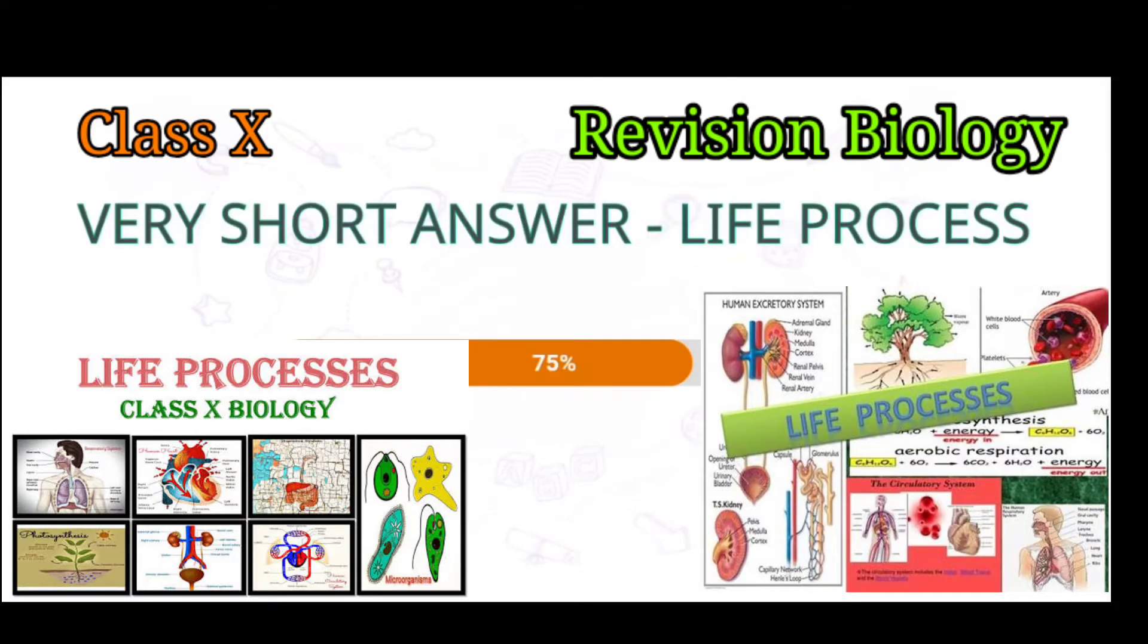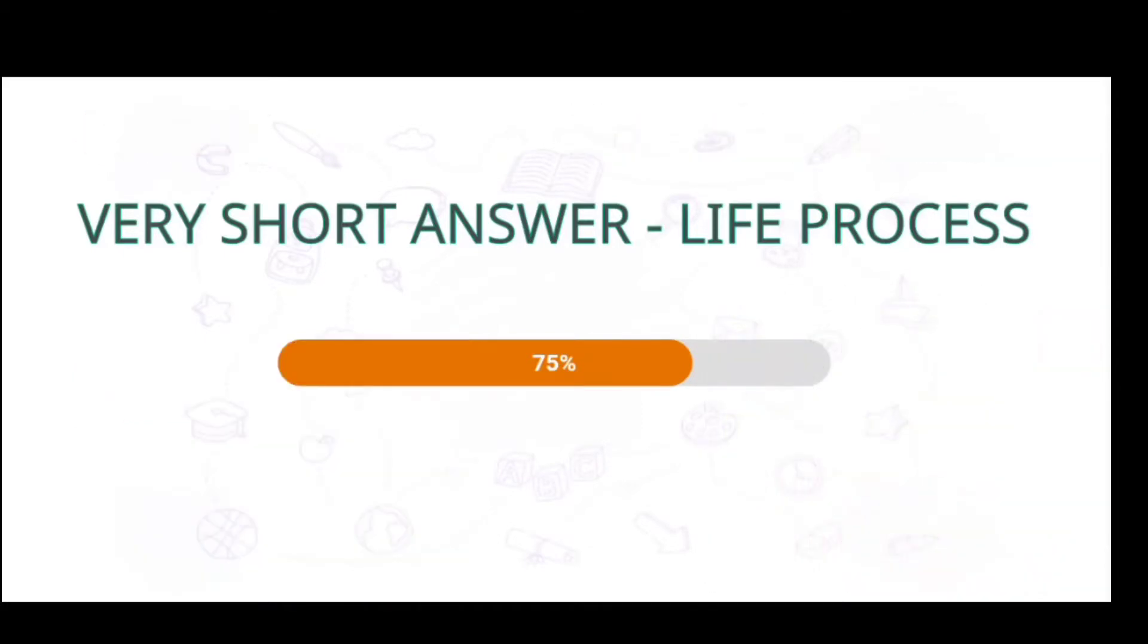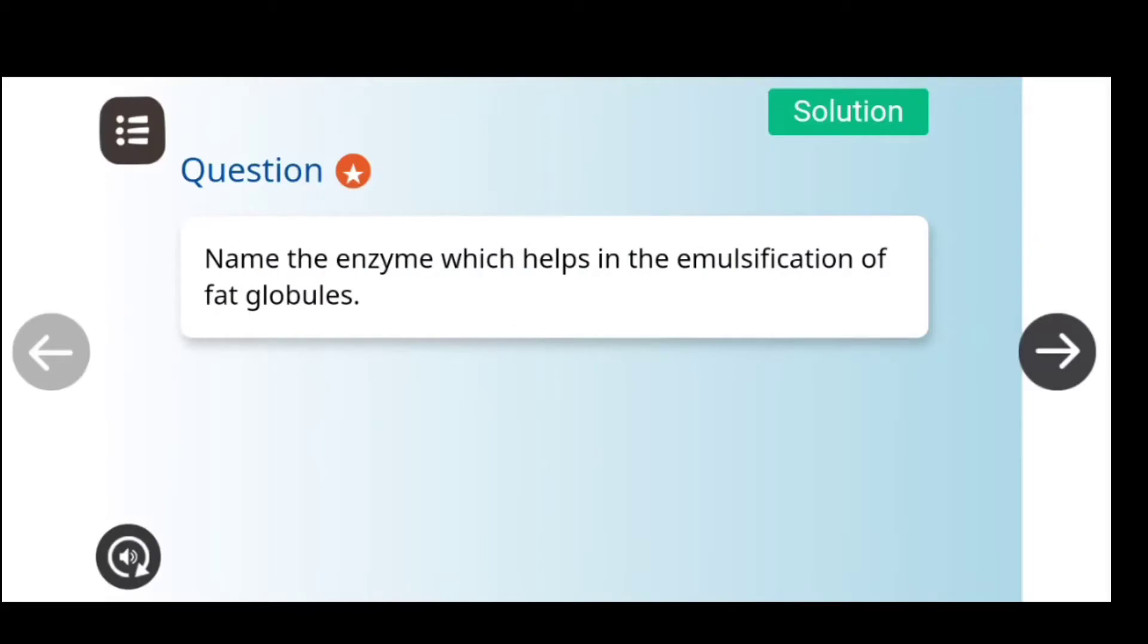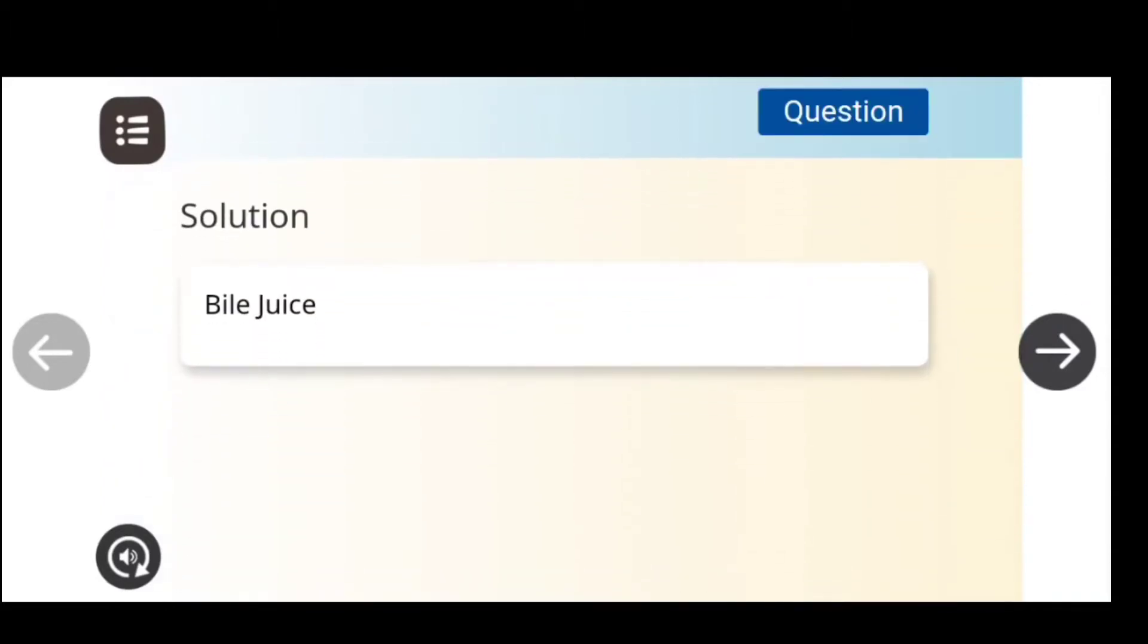Okay students, now we will see the Revision Biology very short answer type questions on Life Processes. Let's begin. The first question is: Name the enzyme which helps in the emulsification of fat globules. The answer is bile juice.